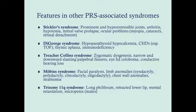Treacher Collins syndrome is zygomatic dysgenesis. They'll have narrow and downward-slanting palpebral fissures, eyelid colobomas, and about 50% of cases will have conductive hearing loss. Mobius syndrome is very rare, with facial paralysis, limb anomalies, chest wall anomalies, and strabismus.